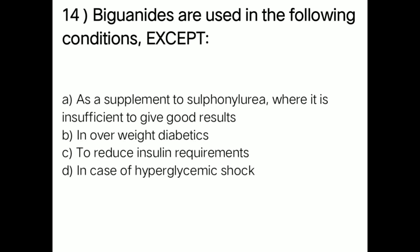Next question: biguanides are used in the following conditions except — option A: as a supplement to sulfonylurea where it is insufficient to give good results; option B: in overweight diabetics; option C: to reduce insulin requirements; option D: in case of hyperglycemic shock. Right answer is option D — in case of hyperglycemic shock, biguanides are not used.